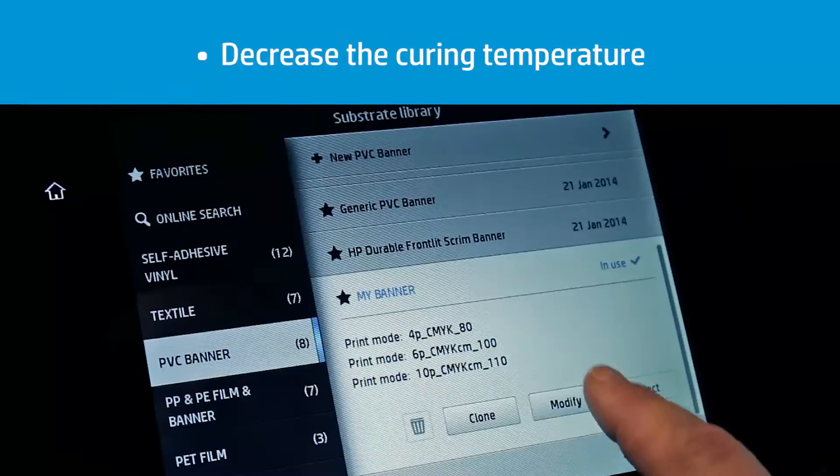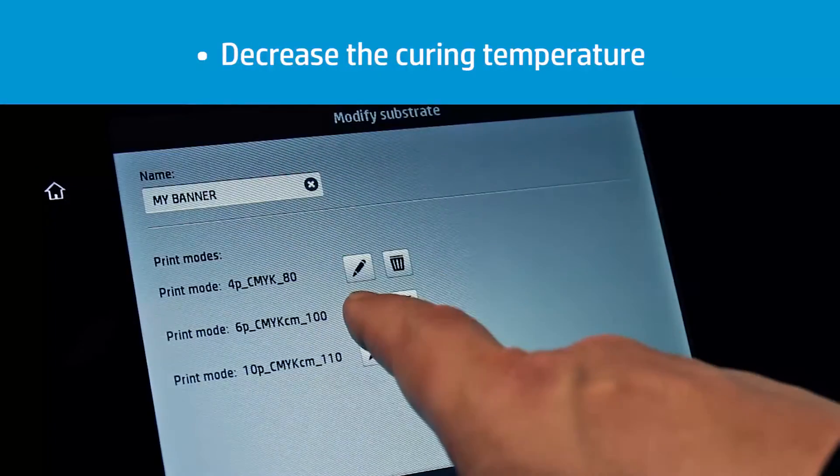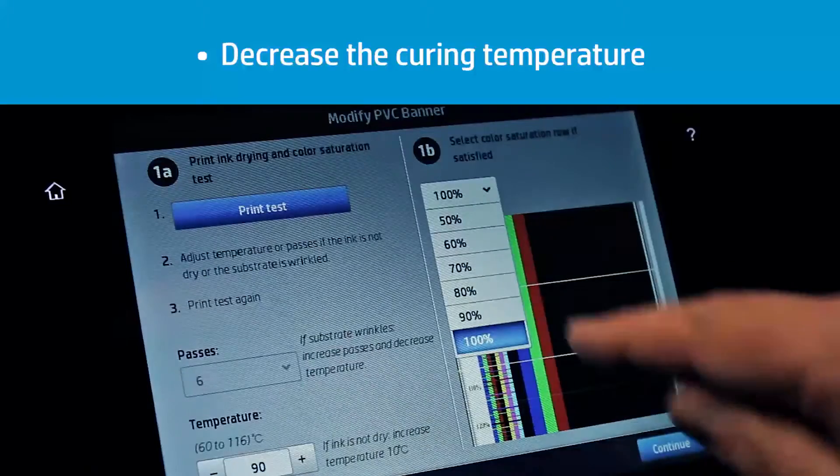The second option is to reduce the ink quantity used so the plots are easier to cure. This may have some effect on the output colors.